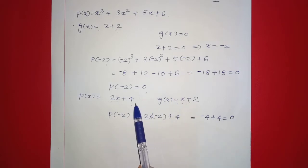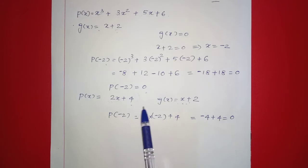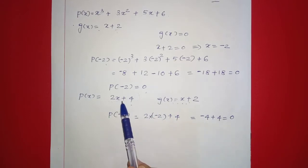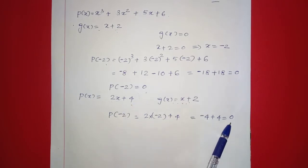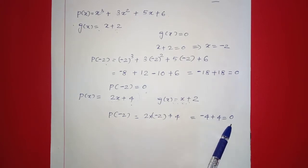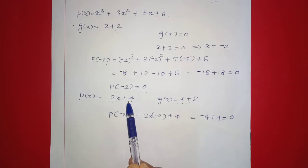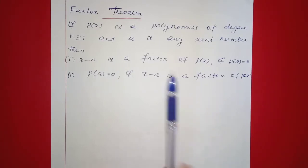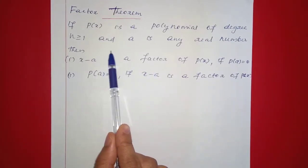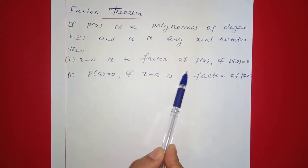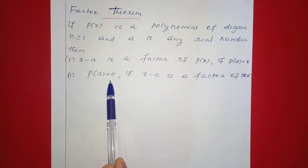Let's check G(x) and P(x). If we substitute 0 into P(x) and get 0, we can confirm that G(x) divides P(x). This is the factor theorem: if P(x) is a polynomial of degree greater than or equal to 1, and a is any real number, then x minus a is a factor of P(x) if and only if P(a) equals 0.